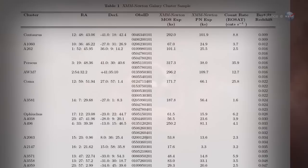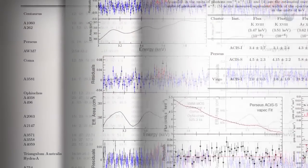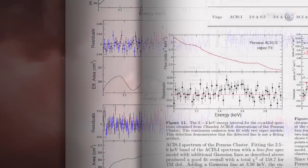I have reanalyzed the data, split the data set into different subgroups, and checked the data from four other detectors on board two different observatories. None of these efforts made the line disappear.